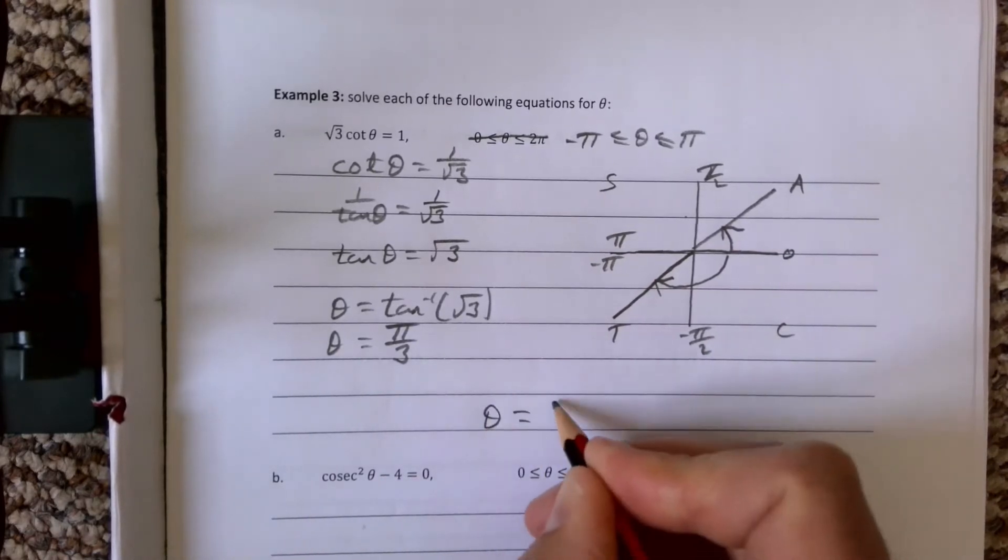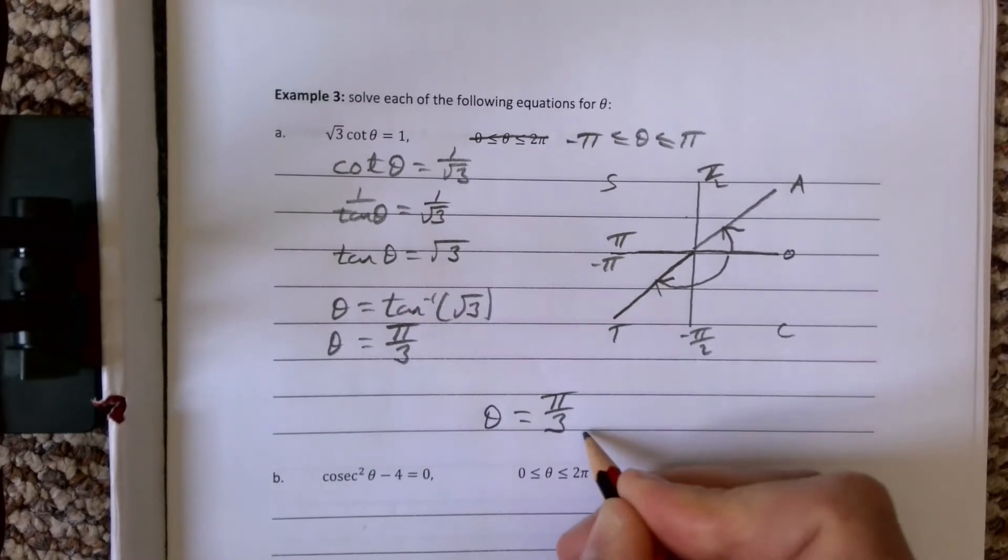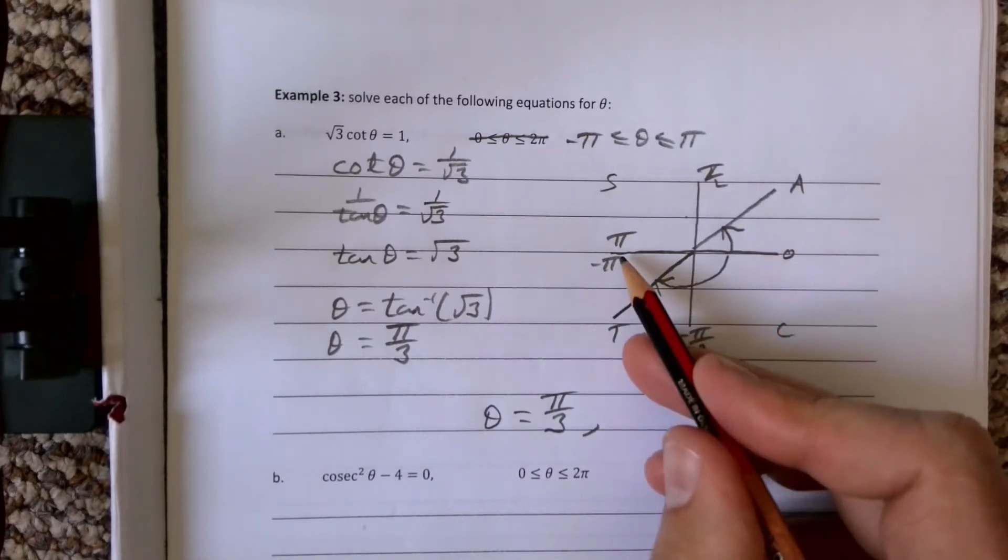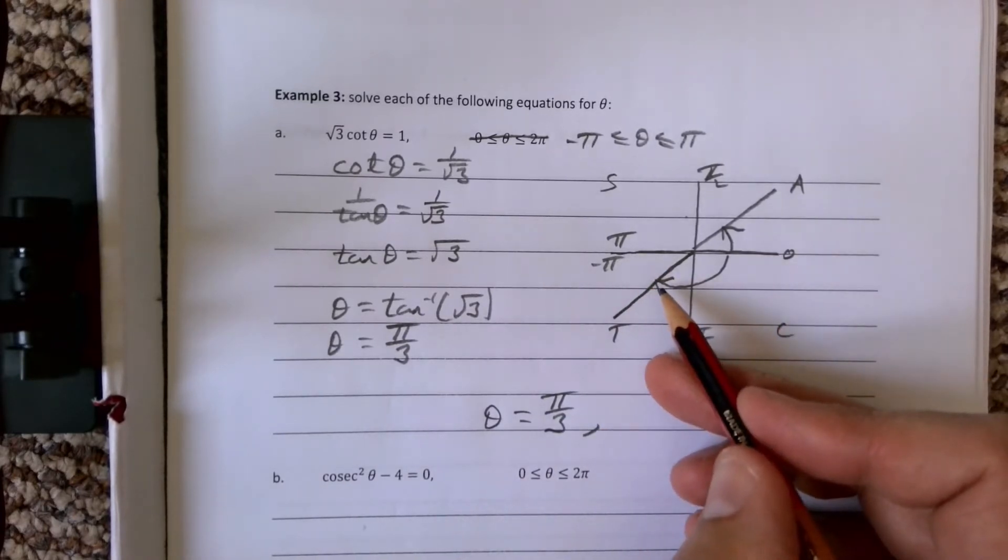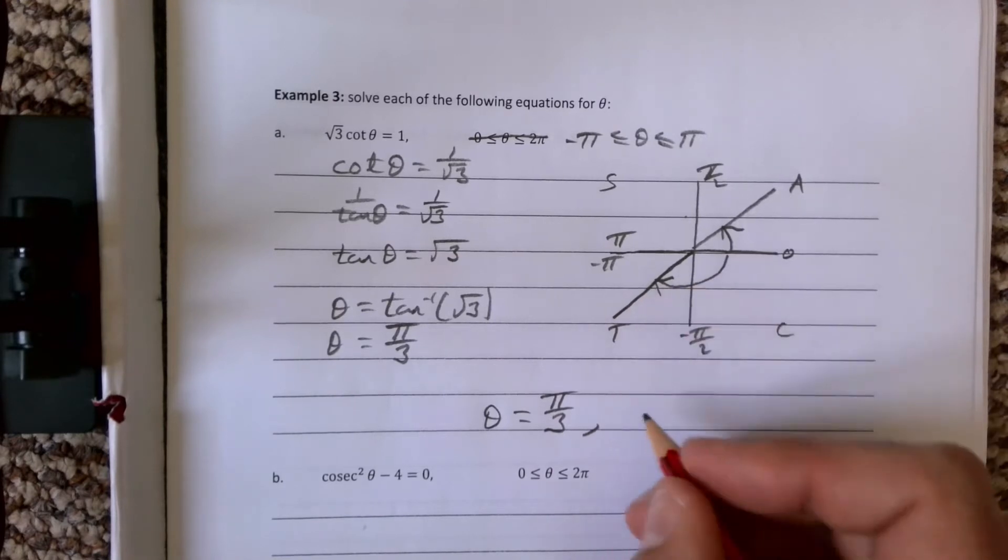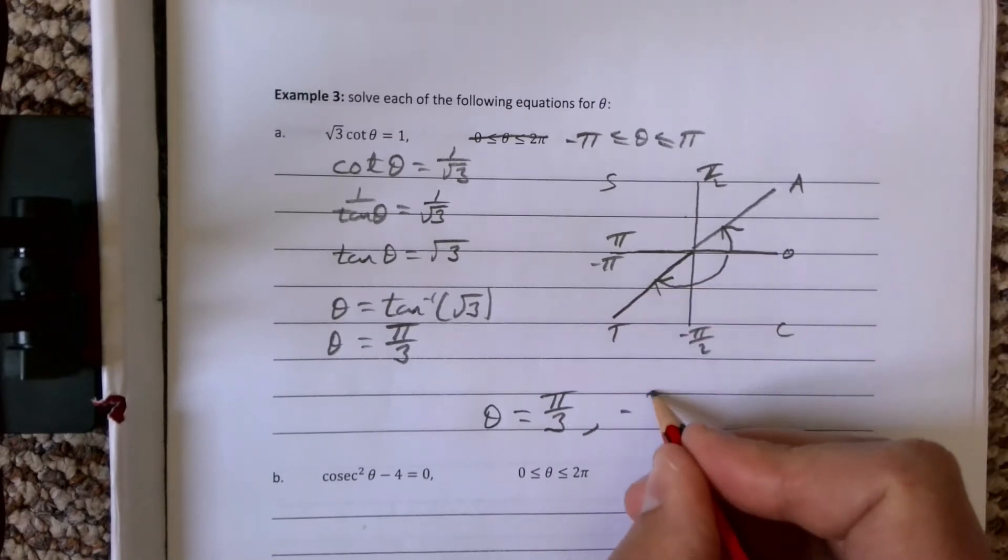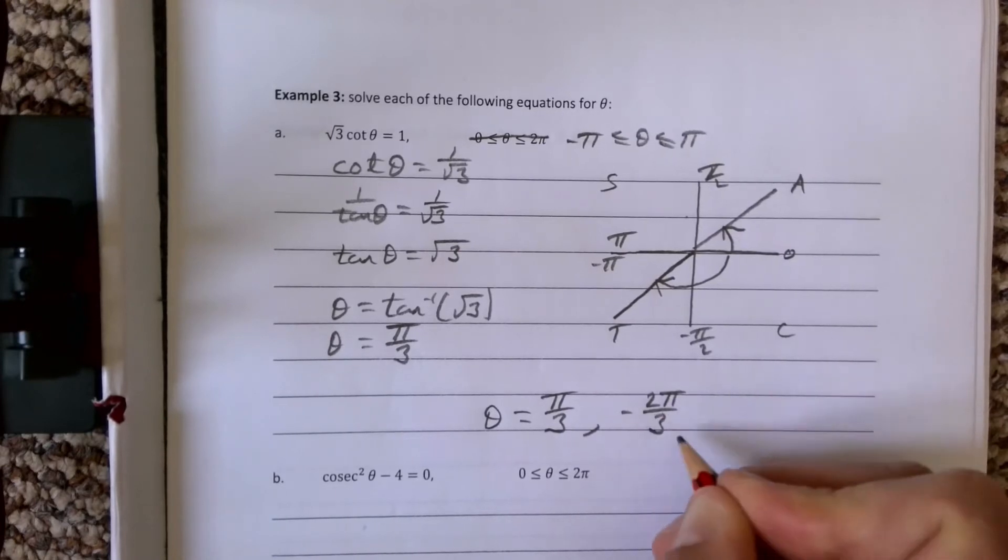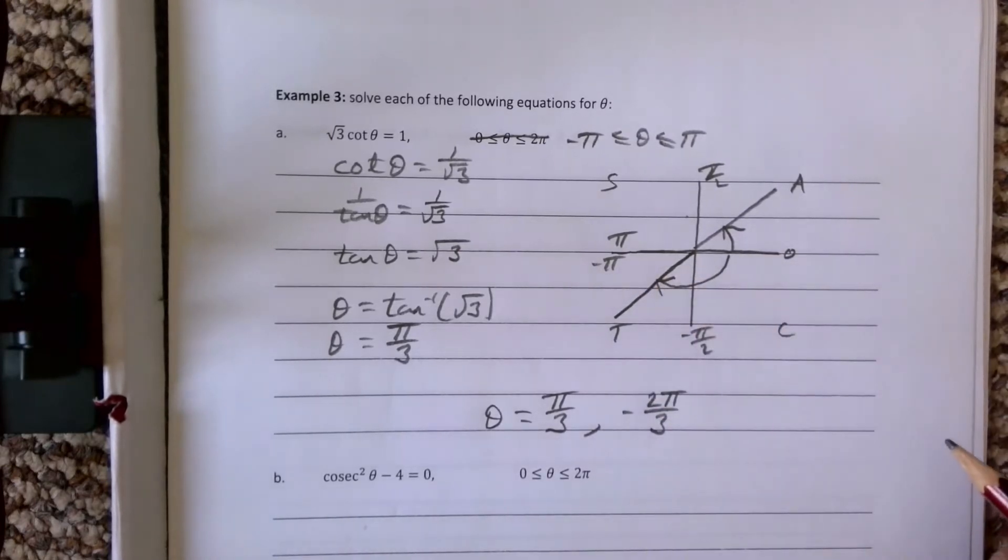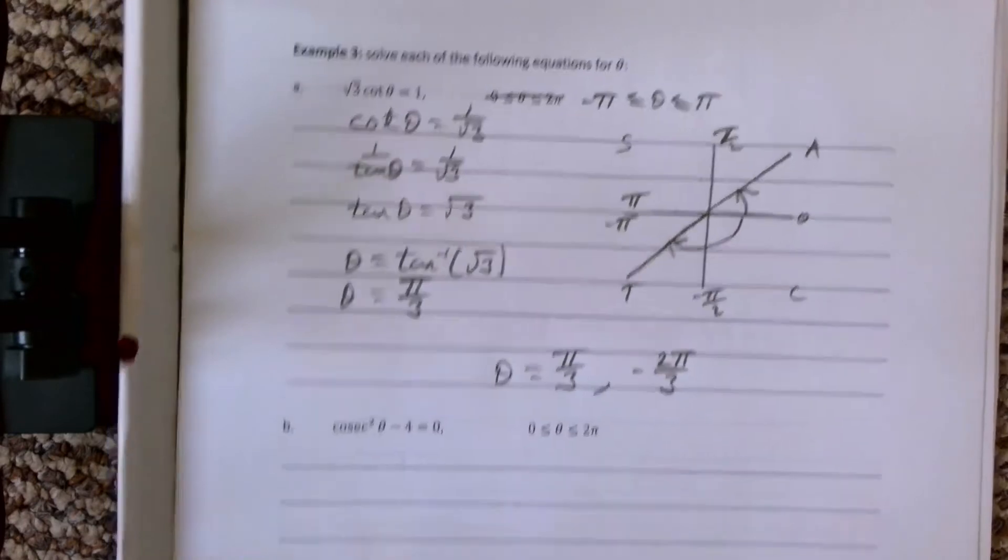So my two angles then are going to be θ equals π over 3, and the other one is going to be π take away π over 3, and it's a negative version of that, so it's minus 2π over 3.